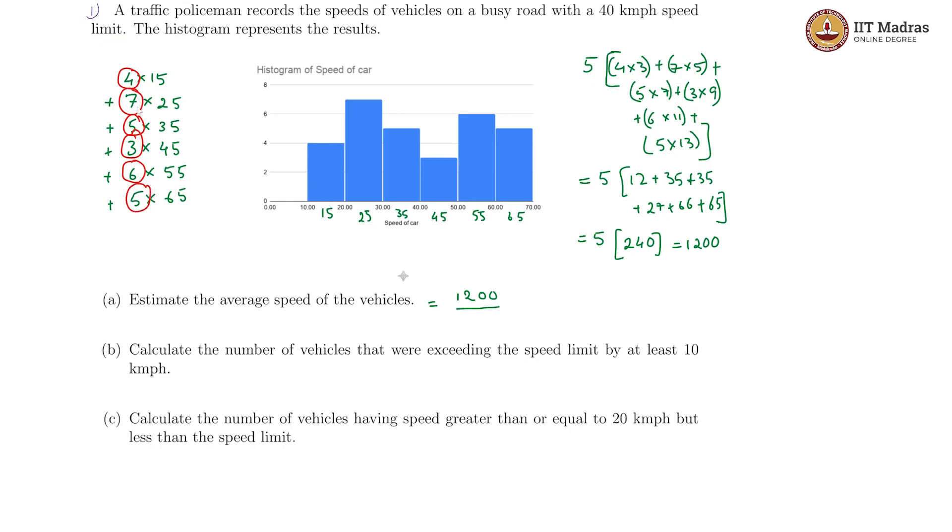4 plus 7 is 11, 11 plus 5 is 16, plus 3 is 19, plus 6 is 25, plus 5 is 30. We are getting 1200 by 30 and this can get cancelled off to give us 40.